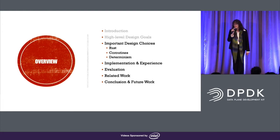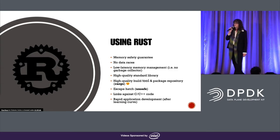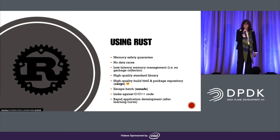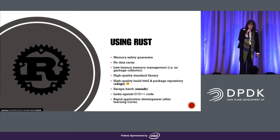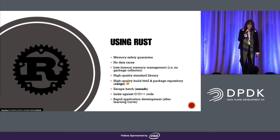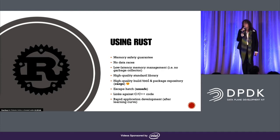Now I'm going to talk about the design choices we made in pursuit of these goals. So why use Rust? We got a memory safety guarantee, which means we're not going to get seg faults or memory corruption. Rust also guarantees there are no data races in our concurrency, which is really useful. It provides low latency memory management, which makes it a contender for systems programming where C and C++ are normally used. Rust has a high-quality standard library and a high-quality build tool and package repository.